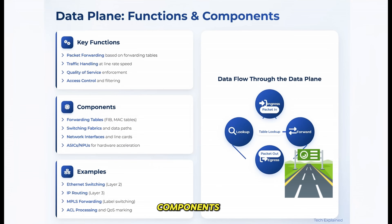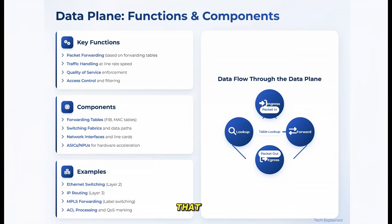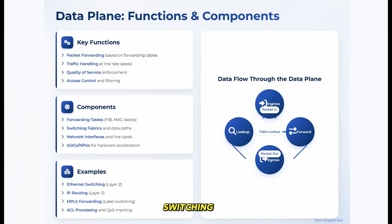Key components of the data plane include forwarding tables — like a map that tells where to send traffic — switching fabrics, the internal pathways that move data through the device, and network interfaces, the connection points to the network. Examples of data plane technologies include Ethernet switching at layer 2, IP routing at layer 3, and MPLS label switching. These technologies all focus on one thing: moving data as efficiently as possible.